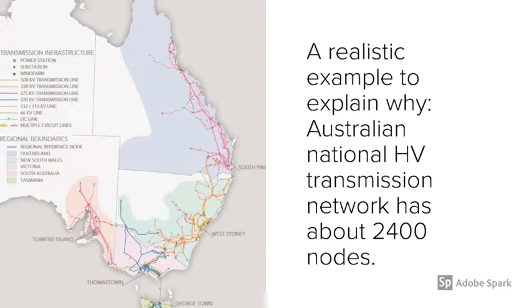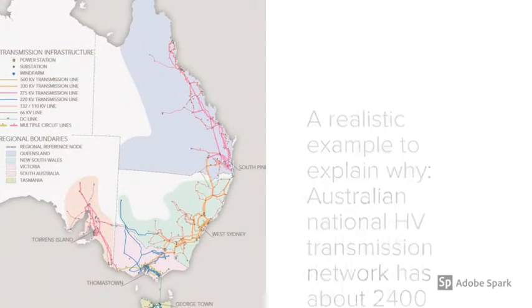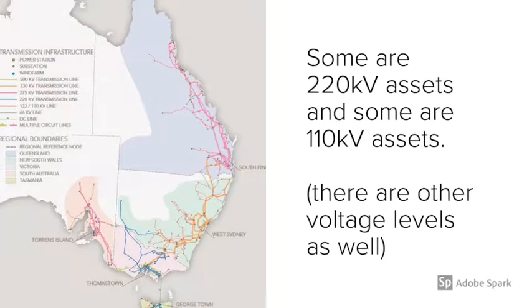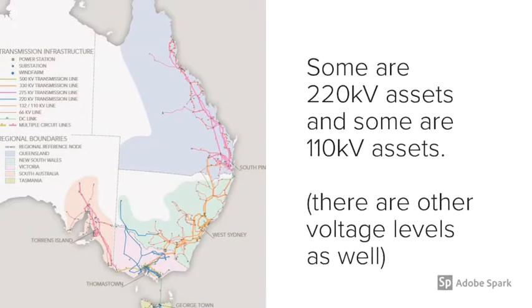Australian national high voltage transmission network has about 2400 nodes. Some are 220,000 volts assets and some are 110 kV assets.